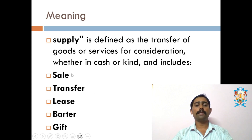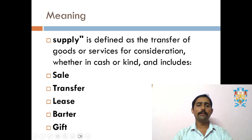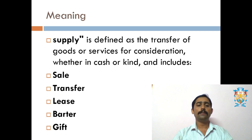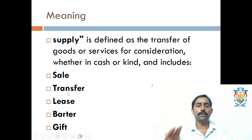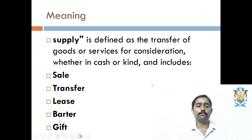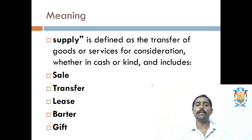There are various types of supplies. The first one is sale, where one product is exchanged for money — ownership is transferred and money is paid. The next one is transfer, where ownership moves from one person to another, including movement of goods from one place to another. Then there is lease, where you get the ownership for a certain period for a fixed amount such as rent or lease amount. Barter is also considered as supply under GST, where one good is exchanged for another good.